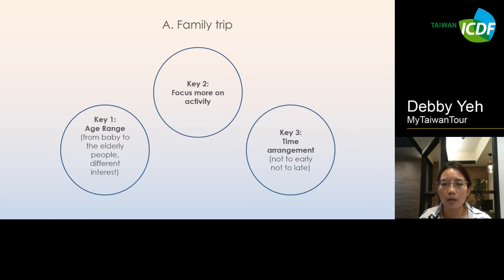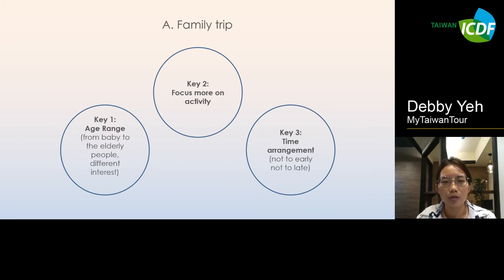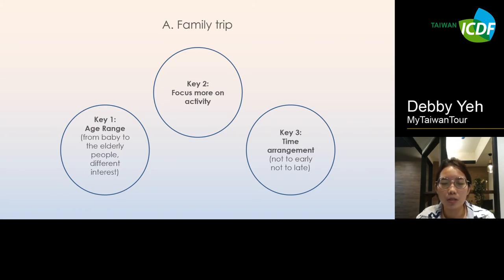Leave some space and time for the family — that is very important when planning your itinerary. To summarize, the three points for the family trip are: first, age differences from the elderly to babies with different interests; second, arrange more activities than a normal group so children stay engaged and parents can rest; and third, time arrangement — don't start too early or end too late, and leave spare free time for the family to enjoy together.